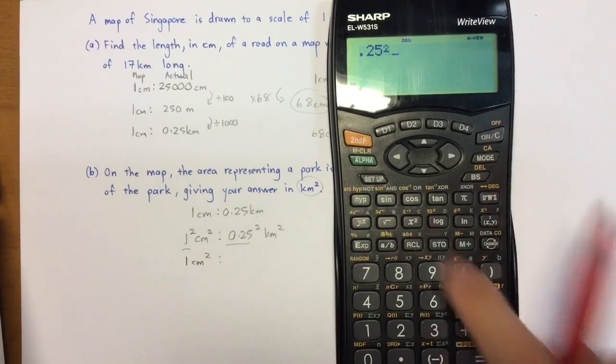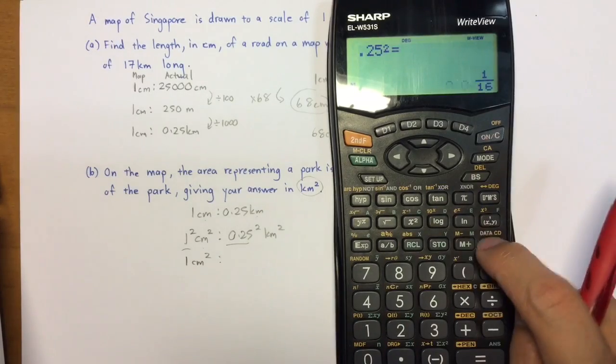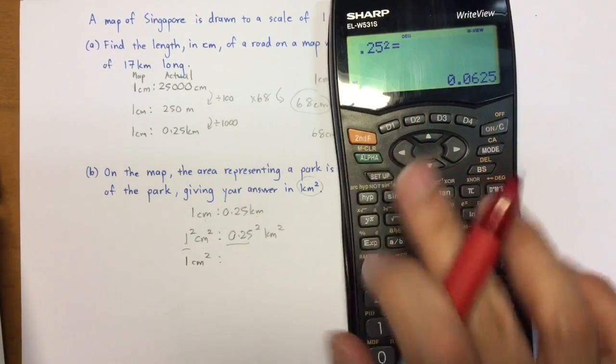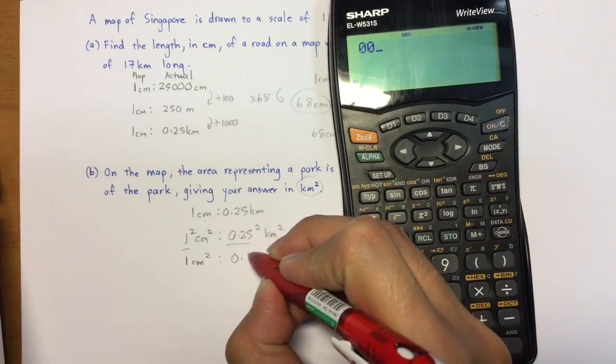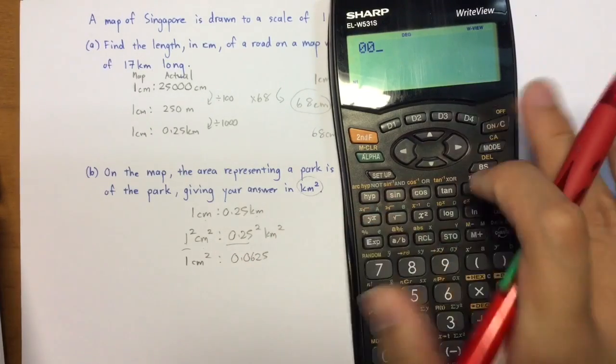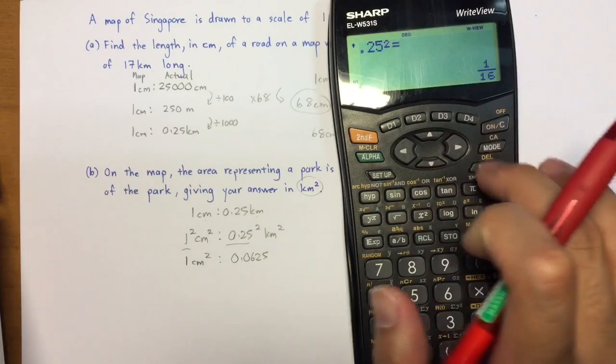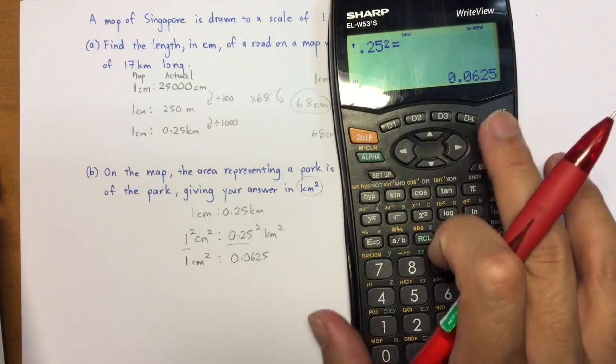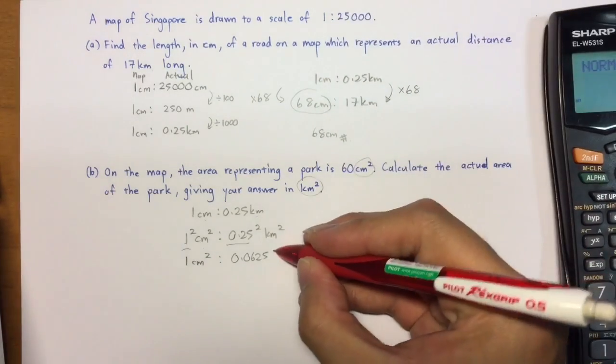So what is 0.25 square? Just key into a calculator and find out what it is in decimals. Okay, so it's 0.0625 km².